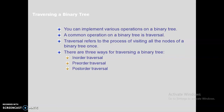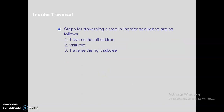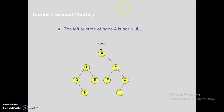There are three types of traversal: in-order traversal, pre-order traversal, and post-order traversal. In in-order traversal, you first traverse the left subtree, then visit the root, then traverse the right subtree — in the same in-order manner. Let's consider an example: the left subtree of node A is not null, so we move on to B to traverse the left subtree of A. From B, we move on to the left subtree — in-order means L (left), D (data), R (right).